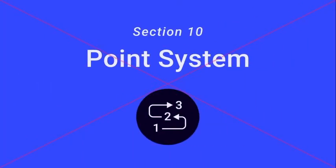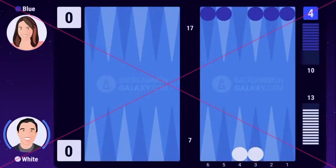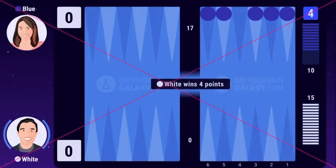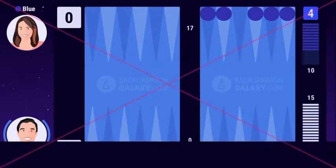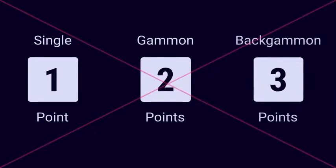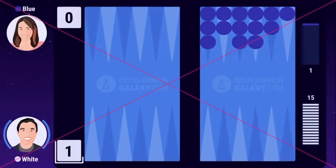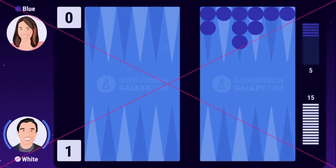Section 10: Point System. These are the final seconds of the game between white and blue. White makes his final roll and bears off his last 2 checkers, thereby winning the game. There are 3 ways of winning a game of backgammon: Single, gammon, and backgammon. Single, 1 point, is when you have borne off all your checkers and your opponent has borne off 1-14 checkers.